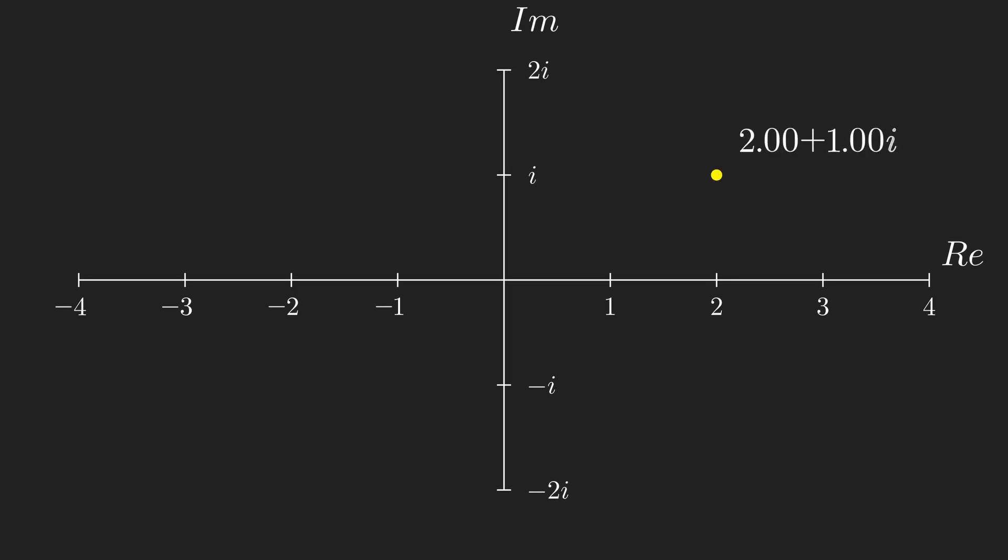Numbers on the complex plane are made up of two pieces. A real part, which specifies the number's location on the real axis, and an imaginary part, which specifies the number's location on the imaginary axis. These two parts together make for a genuinely 2D number system.